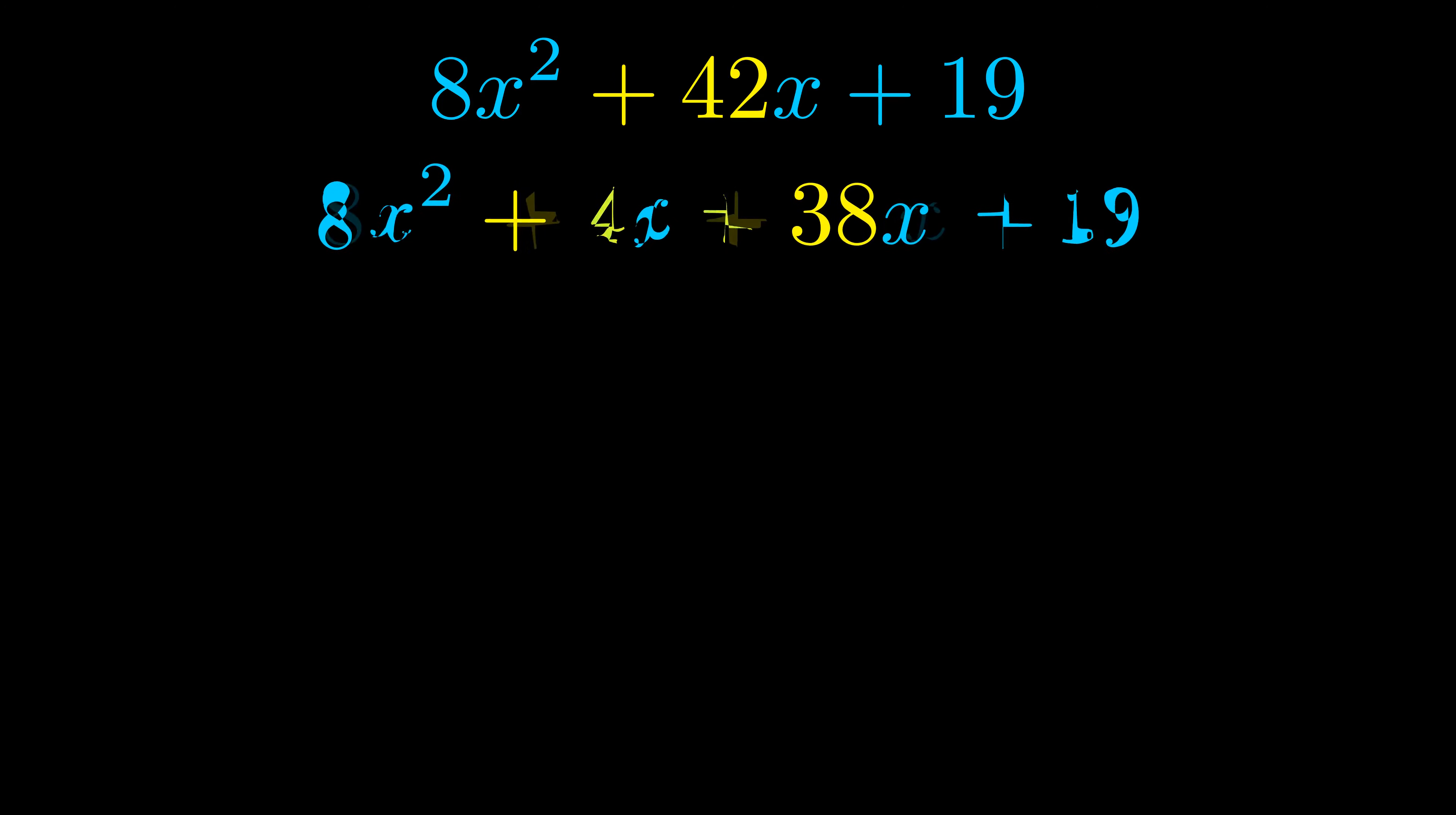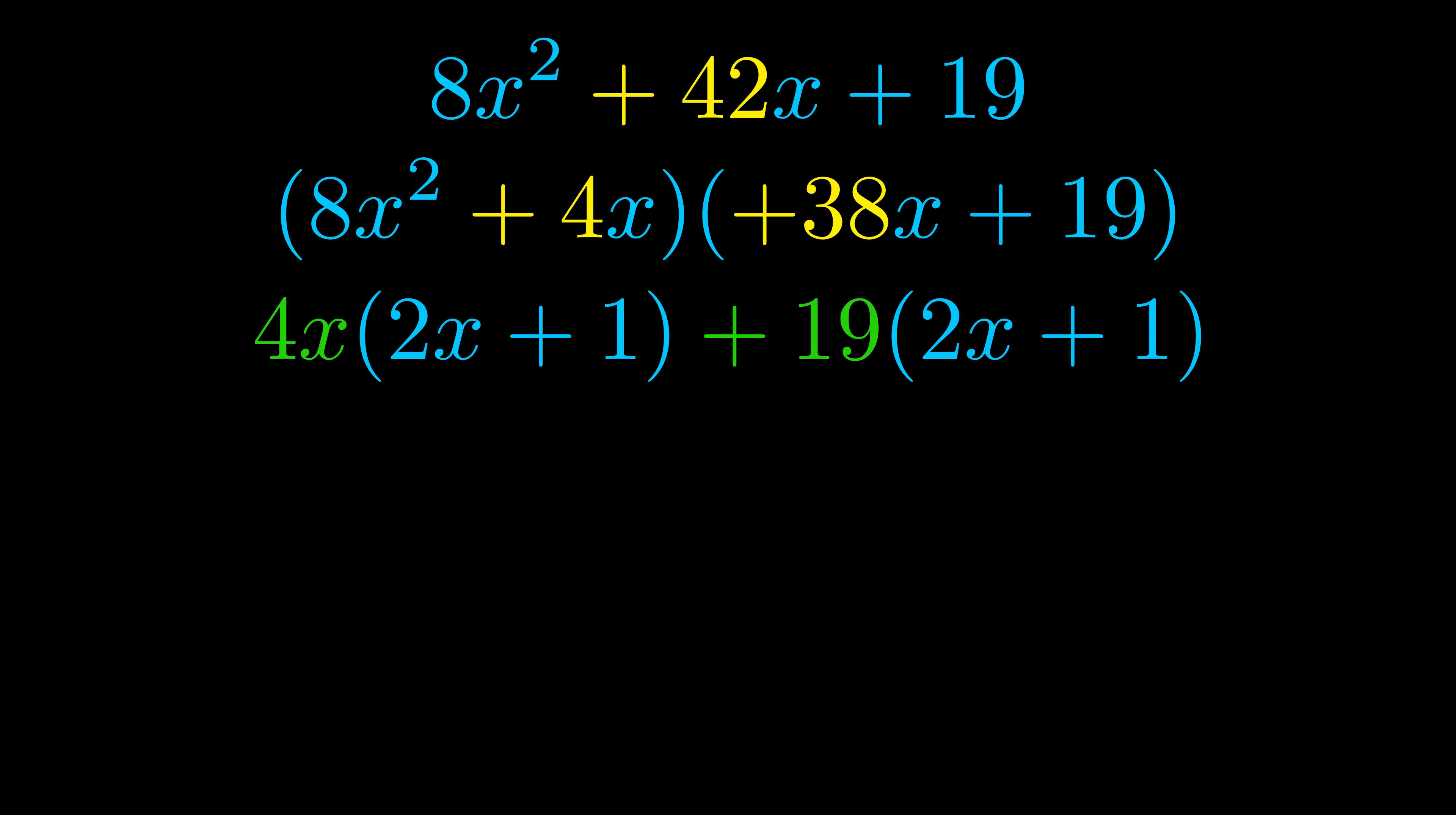Once we've done this we go ahead and put parentheses around the first term and the last term. And we do that so that we can take the greatest common factor out of both terms. We can see the greatest common factor is now outside in green.